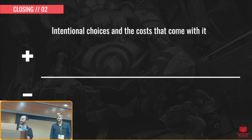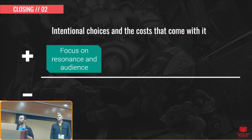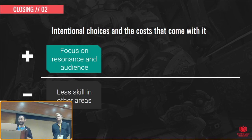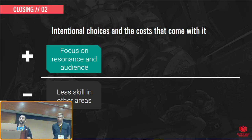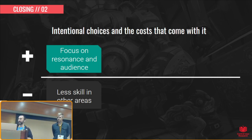An example of an intentional choice: we focus on resonance and audience a lot because we think that's good for de-risking things early on. But the reality is there's a lot of stuff we just don't do or have as much skill in. We don't do UX or usability tests. That's not as valuable early in development, but it means when that comes up, we just don't have as much muscle there. That spans a number of areas, depending on the games you're developing.